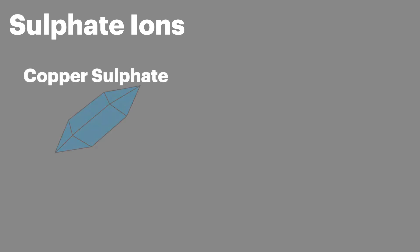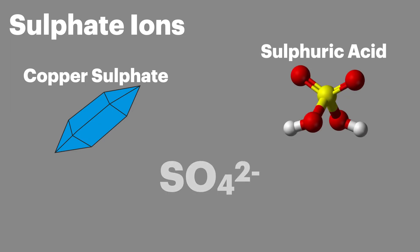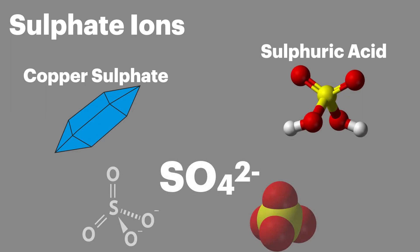So to start with, we have sulfate ions present in a variety of different compounds — everything from copper sulfate to sulfuric acid — and the sulfate ion is SO4 2-.